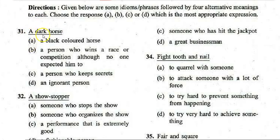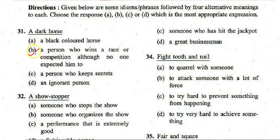First idiom: 'Dark horse.' Options: A. Black colored horse, B. A person who wins a race or competition although no one expected him to, C. A person who keeps secrets, D. An ignorant person. The correct answer is B — a person who wins a race or competition although no one expected him to.